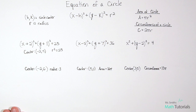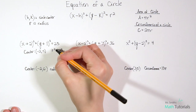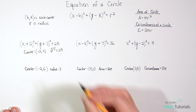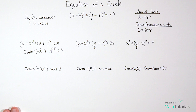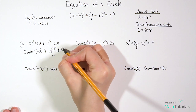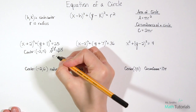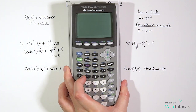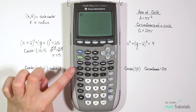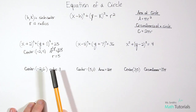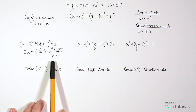For the radius, we've got 25, but remember that 25 is r². So r² = 25. We don't want r squared — we want just r. We can get rid of the square by taking the square root. The square root of 25 is 5, since 5 × 5 = 25. You can always check on the calculator: square root of 25 gives you 5. So the center of the circle is (-2, -1) and the radius is 5.